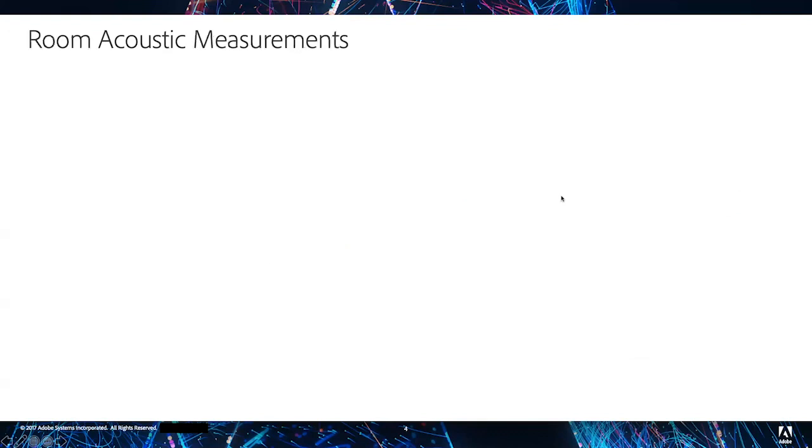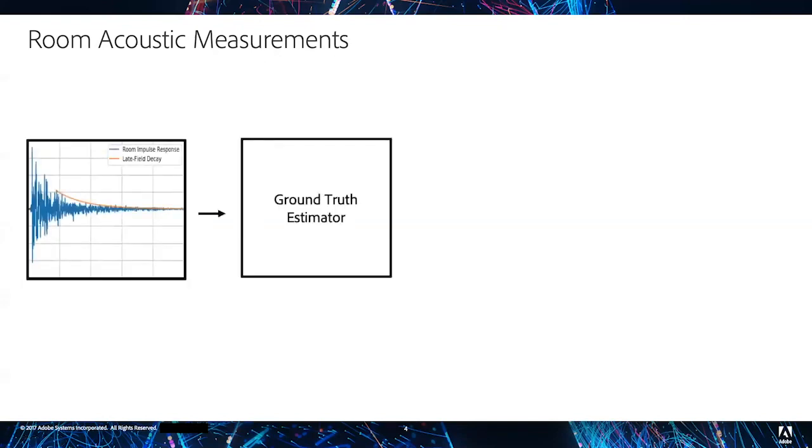Given an IR, further processing can be applied directly to it using what we call ground truth estimators. Ground truth estimators can be used to estimate physical or perceptual properties of an acoustical space.